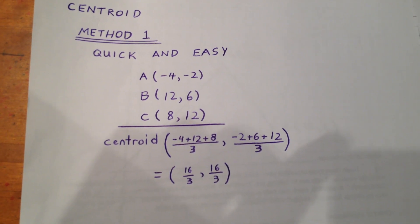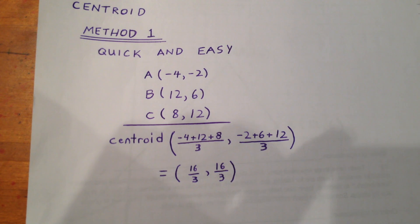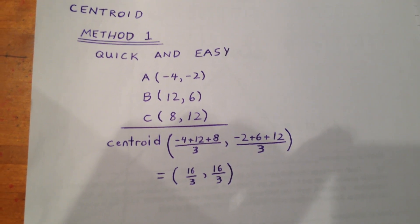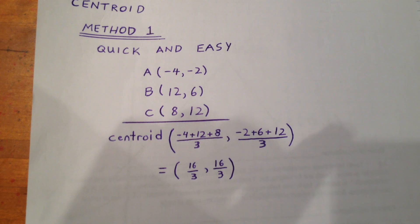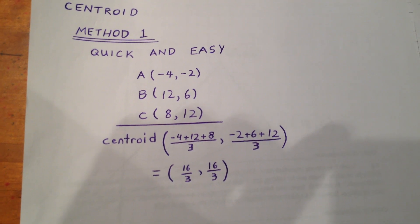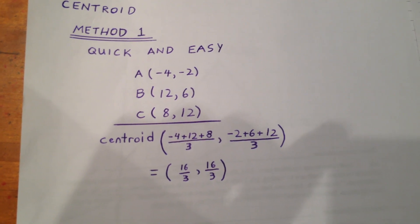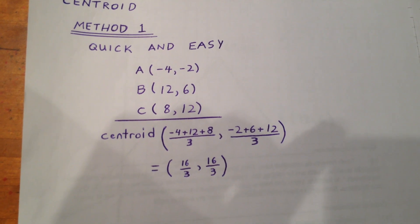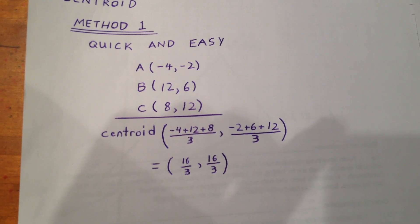So the quick method looks like that. Simply add them up. Negative 4 plus 12 plus 8 is equal to 16, and divide that by 3, you get 16 thirds. Similarly, negative 2 plus 6 plus 12 added up is 16. Divide that by 3, and you get 16 thirds.